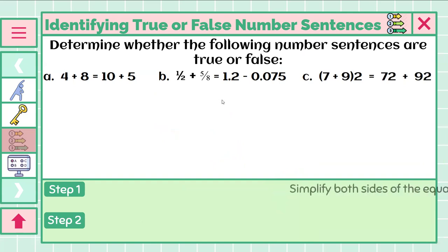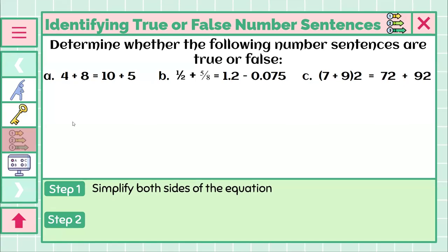So, our step 1 is simplify both sides of the equation. Well, that makes sense. So if we look, we'll start with A. On the left side, we have 4 plus 8. On the right, we have 10 plus 5. Well, let's simplify that. 4 plus 8 we can add together. And 4 plus 8 is 12. So on this side, we have 12. We can also simplify 10 and 5 together. Well, 10 plus 5 is 15.